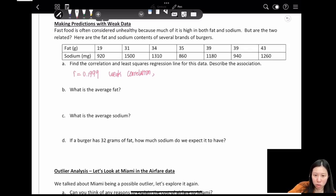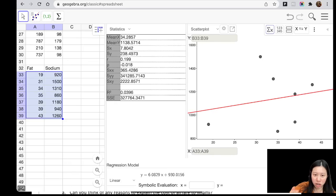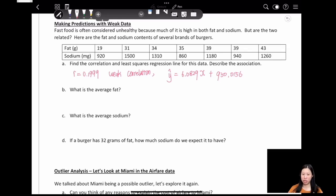We can write this down: r equals 0.199, which is a weak correlation. And also we can take a look at our prediction model.